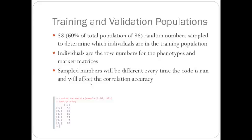So for 60 percent of the total population, that's 58 individuals. 58 individual numbers need to be sampled to determine which individuals are in the training population. To do random sampling in R, it's just the sample command.